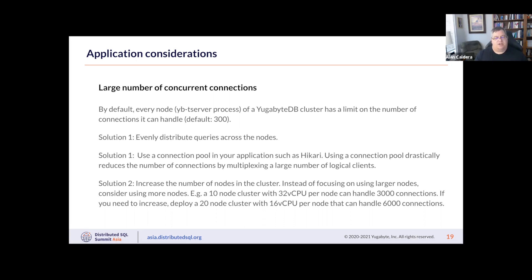You should also look at using a connection pool like HikariCP, which will dramatically reduce the number of actual connections you need to make to the database. Lastly, instead of trying to increase the number of connections per node, at the point where you feel you don't have enough connections you should really look at increasing the number of nodes. Using more nodes will make for better scalability rather than just increasing the load on existing tablet servers.